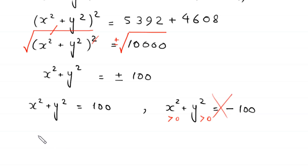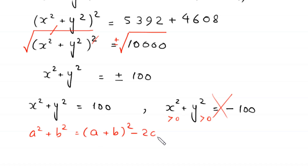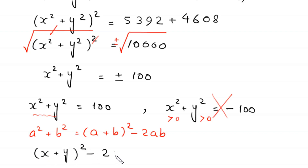Now by using the algebraic identity a squared plus b squared equals (a plus b) whole squared minus 2ab, we write x squared plus y squared as (x plus y) whole squared minus 2 times x y, which equals 100. We then replace x y with the value from equation 2, which is 48.